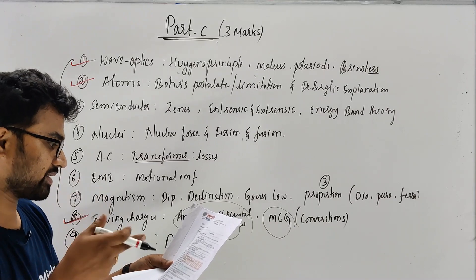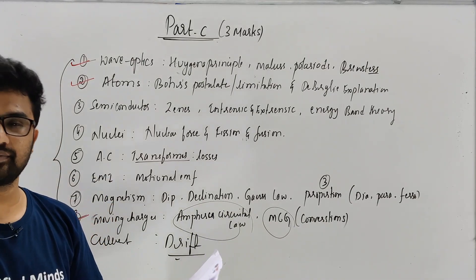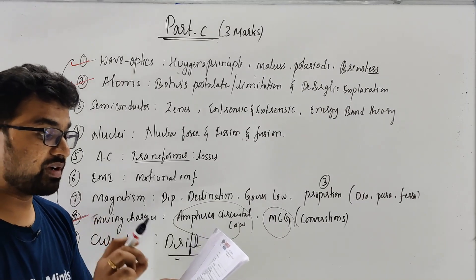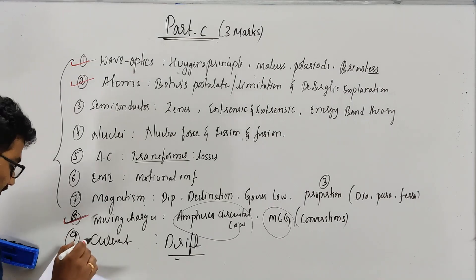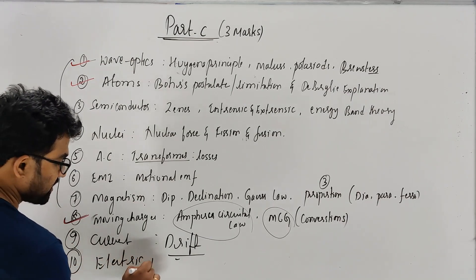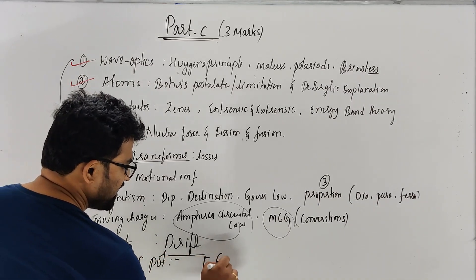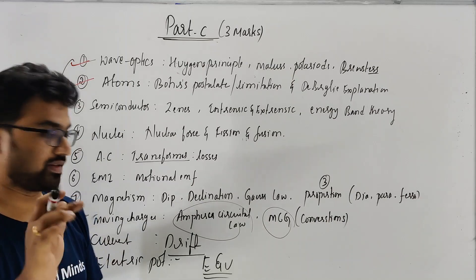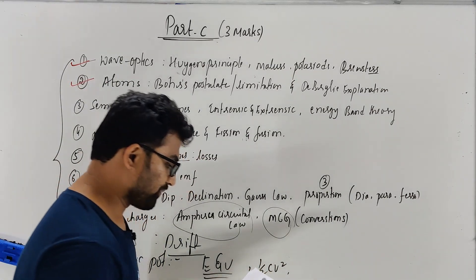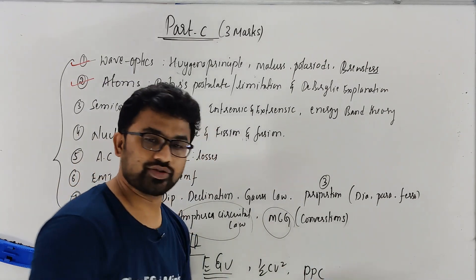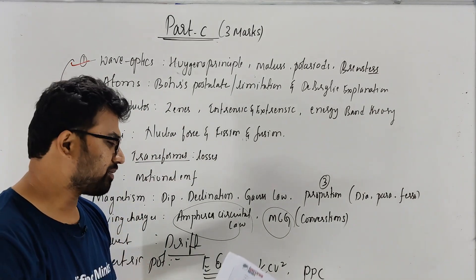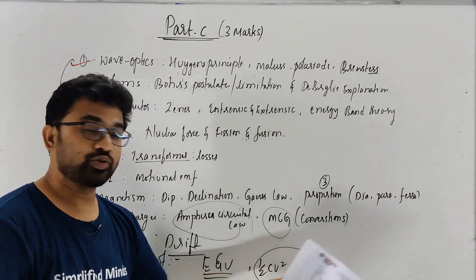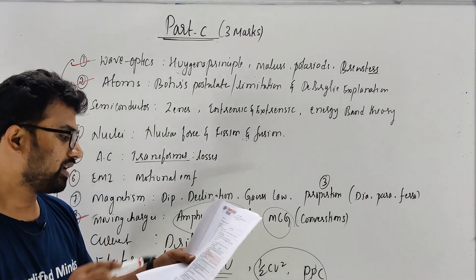In the current electricity, drift velocity derivation. These are five derivations. And moving charge magnetism is already complete. One shot will move. So if you just go to MCG conversions, ampere circuit, you can study that. Just a drift loss note. This is the current electricity and you can see a series parallel derivation. It's very simple from 10th it will be there. That will be easier. The next thing is the energy stored in electric potential and capacitance, the relation between potential and field.